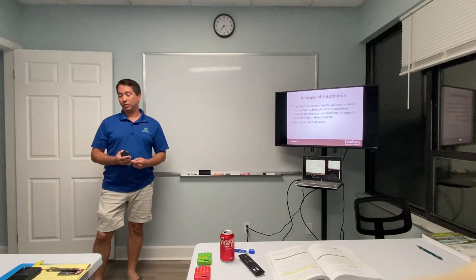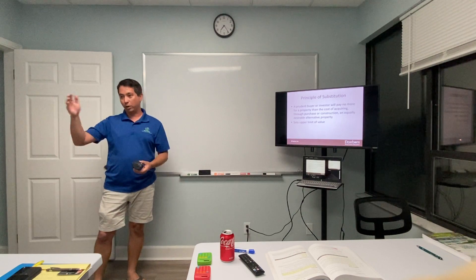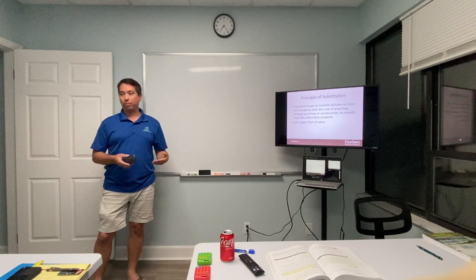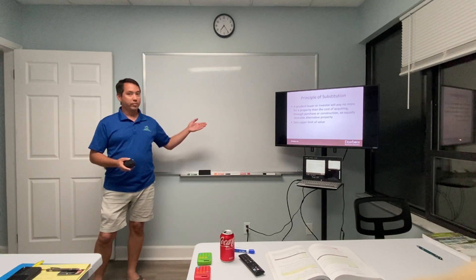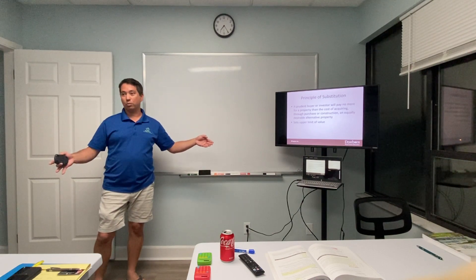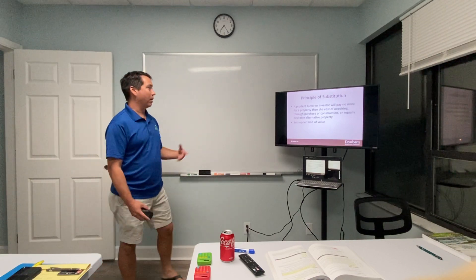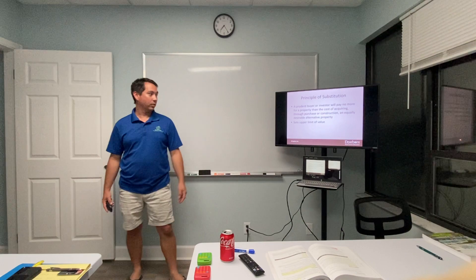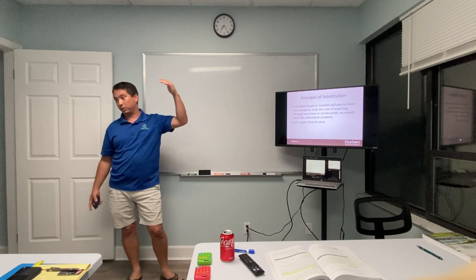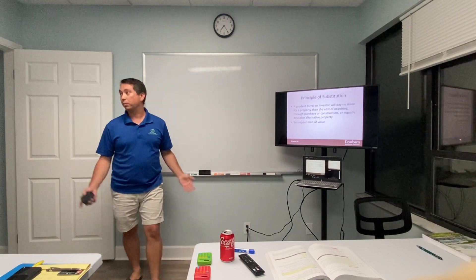The principle of substitution sets the upper limit of value. We pick three or four similar homes, and based on the average and reconciled price, we say the house is worth a certain amount. If a comp is a three-bedroom and the subject is four bedrooms, we have to add the value of a bedroom — maybe $2,000 — adjusting the price. That's how the principle of substitution works.